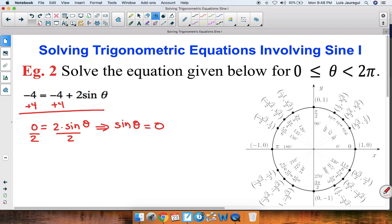Now we're looking for any angles between 0 inclusive and 2π exclusive that will have sine of theta equal to 0. In other words we're looking for all angles whose y coordinate equals 0. We see that the only angles between 0 and 2π with y coordinate equal to 0 are 0 and π radians.